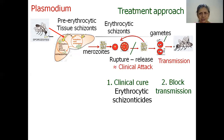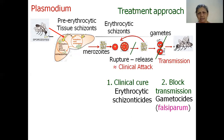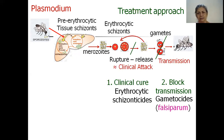To block transmission, we need to kill the gametes so a mosquito cannot pick them up and transmit them to another human being — so we need a gametocidal agent. A separate gametocidal agent is required only for falciparum, because the erythrocytic schizonticides used to cure vivax and ovale are also capable of killing their gametes, so vivax and ovale do not need a separate gametocidal agent. However, many erythrocytic schizonticides cannot kill falciparum gametes, so an additional gametocidal drug is needed for falciparum.